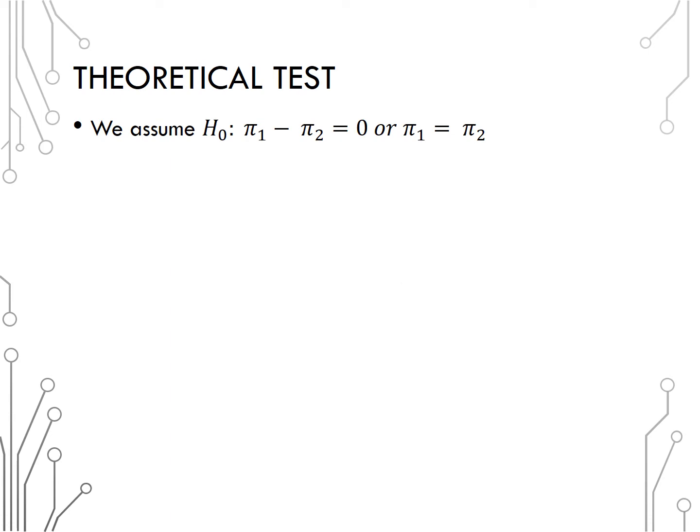Since we are assuming the null is true, we must assume that pi 1 minus pi 2 is equal to zero, or simply pi 1 is equal to pi 2. Using this assumption, we can simplify the distribution from the previous slide, so that the distribution in sample proportions under the null hypothesis will be distributed normal, centered at zero, with square root pi times 1 minus pi times 1 over n1 plus 1 over n2, where pi is equal to pi 1, which is also equal to pi 2, under the null hypothesis.